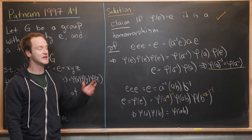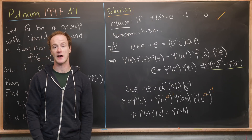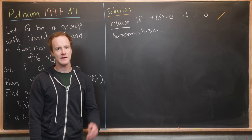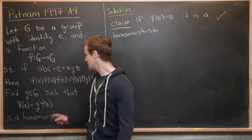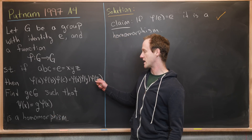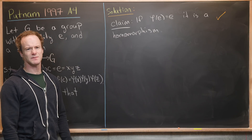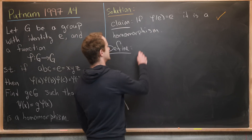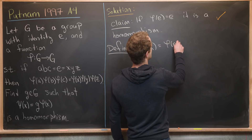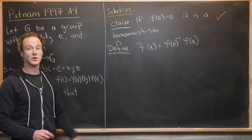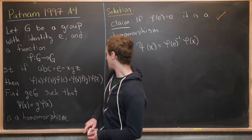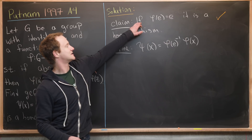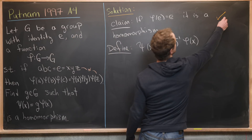This gives us motivation for how to construct psi. We need psi to satisfy the defining property of phi and to take the identity to itself. Define psi(x) = phi(E)^{-1}·phi(x). We'll show psi is a homomorphism by verifying it satisfies the triple-product condition and that psi(E) = E. Satisfying psi(E) = E is trivial — you can check that directly — so we mainly need to verify the triple-product condition.